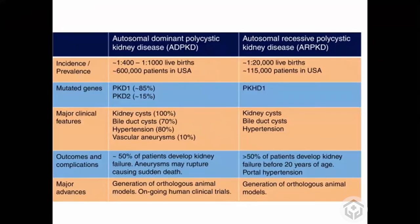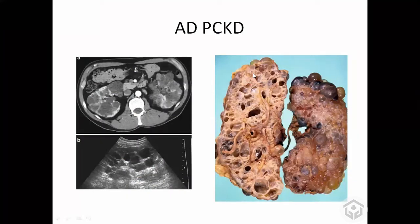In autosomal dominant polycystic kidney disease, the renal cysts are big cysts that develop larger over time. You can see in the picture the cysts are big, and in between there will be some normal renal parenchyma. The cysts can develop hemorrhage and infection. On CT scan you will see multiple cysts inside the kidney with some normal parenchyma in between. These patients typically present in their 30s and 40s with bilateral masses.